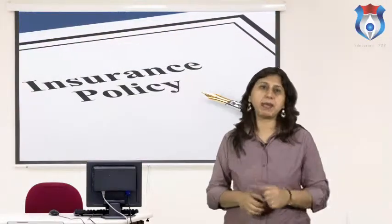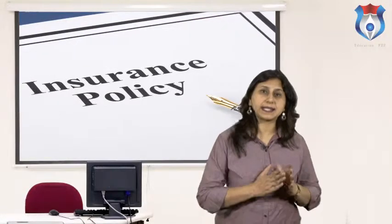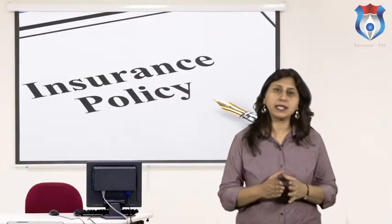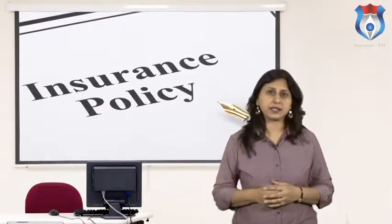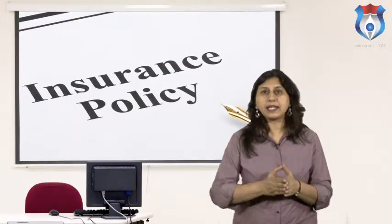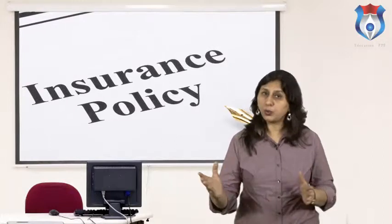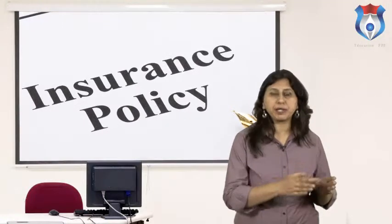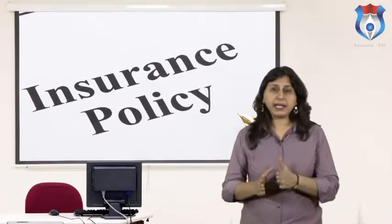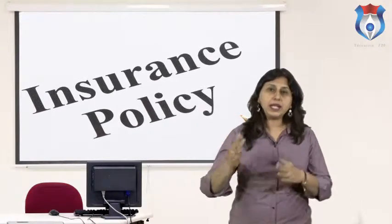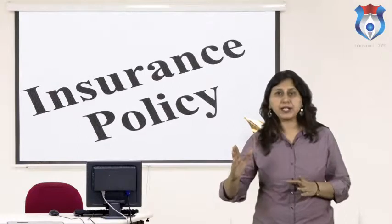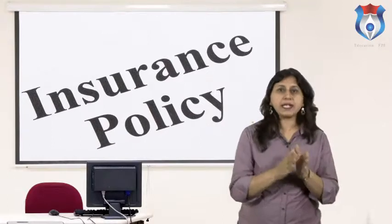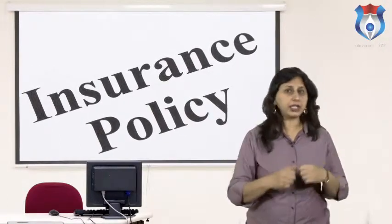The insurance policy method, also known as the capital redemption policy method, involves the organization taking a policy from an insurance company against the asset. The amount of the policy is sufficient to replace the asset when it is worn out. The fund equal to the amount of depreciation is paid by means of premium every year. This fund accumulates at a certain rate of interest with the insurance company and is paid back to the insured organization after the maturation of the policy. The amount made available by the insurance company is then used for purchasing a new asset.